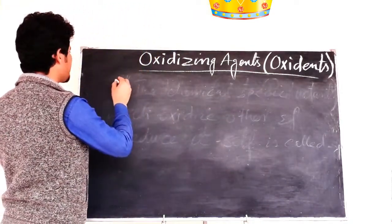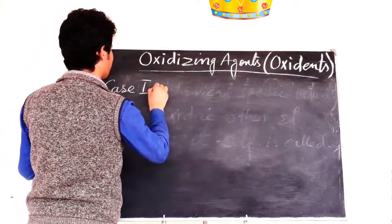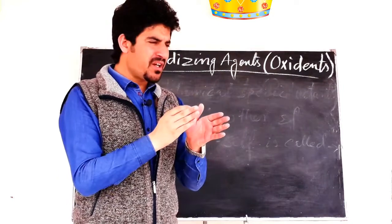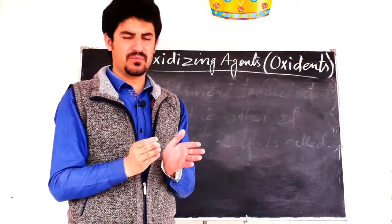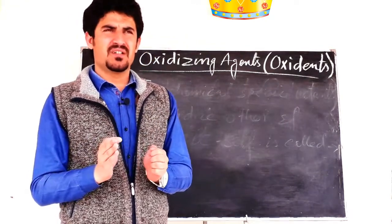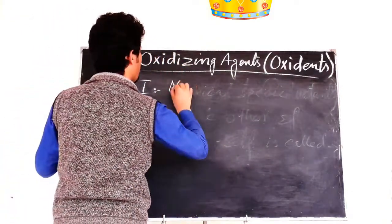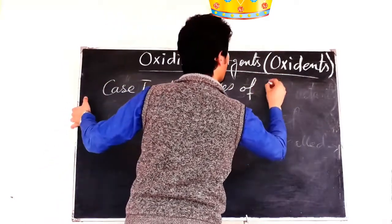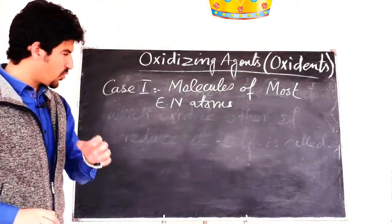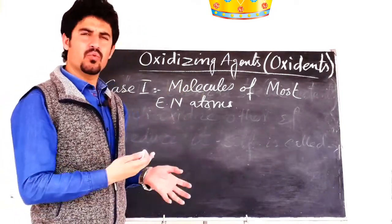The first case: molecules in which the most electronegative elements are present. Molecules of the most electronegative atoms — these molecules of most electronegative elements are oxidizing agents.